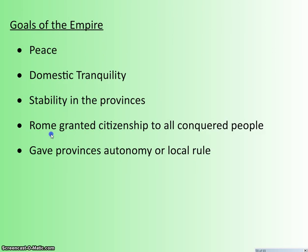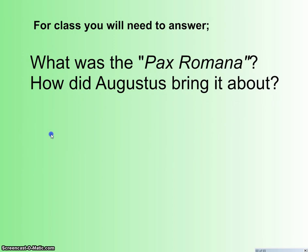The goals of the empire are peace, domestic tranquility — no rebellions — and stability in the provinces so taxes can be collected and crops grown. After roughly 15 to 20 years of civil war, stability is paramount. One way they accomplish this is by granting citizenship to all conquered people, following Roman citizenship rules with property restrictions and men only. They give provinces autonomy or local rule, allowing the local governor to run things as long as tax revenue is flowing as expected. For class tomorrow, be ready to answer: what was the Pax Romana and how did Augustus bring it about? That's all for now — we'll pick up with Christianity on Monday.